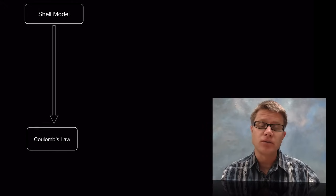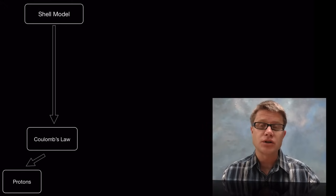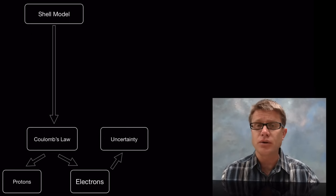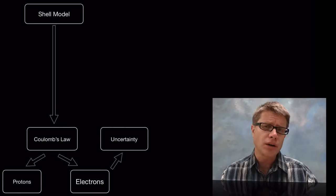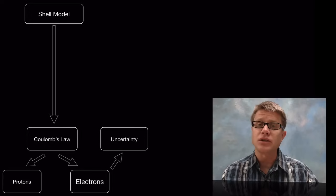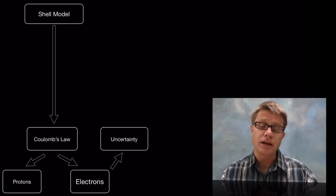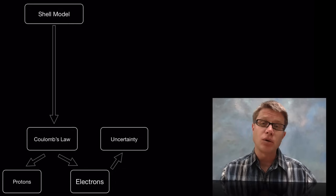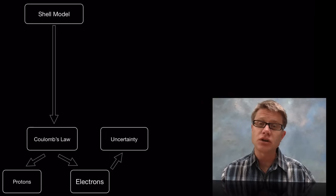And so our shell model really is based on Coulomb's law, which talks about the interactions between protons and electrons. But there's a couple of things about electrons that we discovered. One was the uncertainty principle. In other words, when you're looking at an electron, the act of light bouncing off of that and coming back to you changes the momentum of the electron. So you can never know both the location and the momentum of an electron. There's uncertainty there.